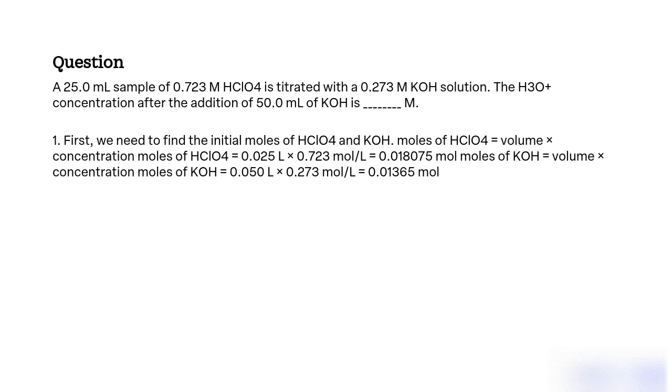First, we need to find the initial moles of HClO4 and KOH. Moles of HClO4 equals volume times concentration: moles of HClO4 equals 0.025 L times 0.723 mol/L equals 0.018075 mol. Moles of KOH equals volume times concentration: moles of KOH equals 0.050 L times 0.273 mol/L equals 0.01365 mol.